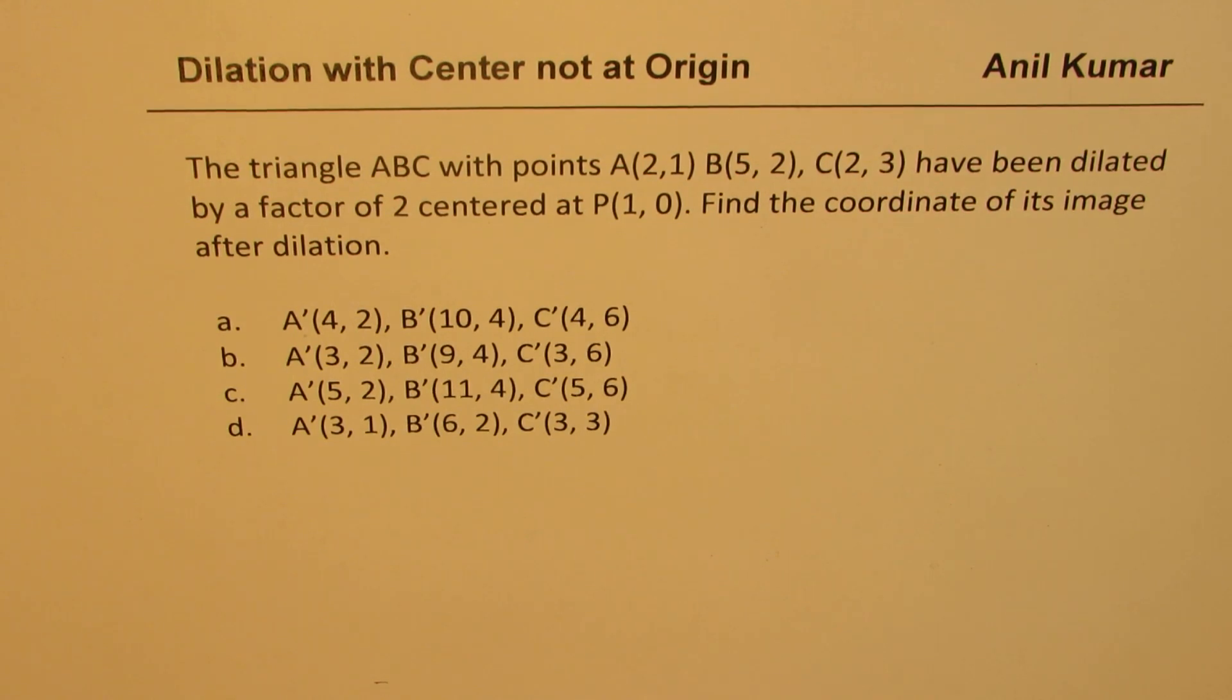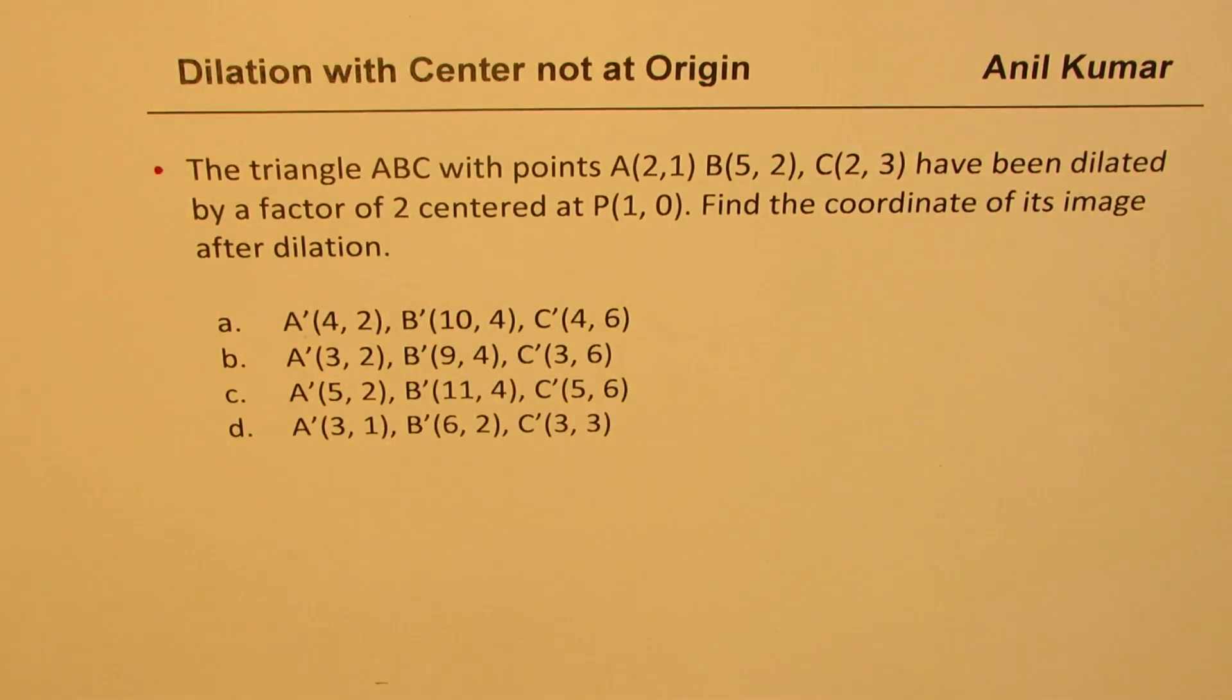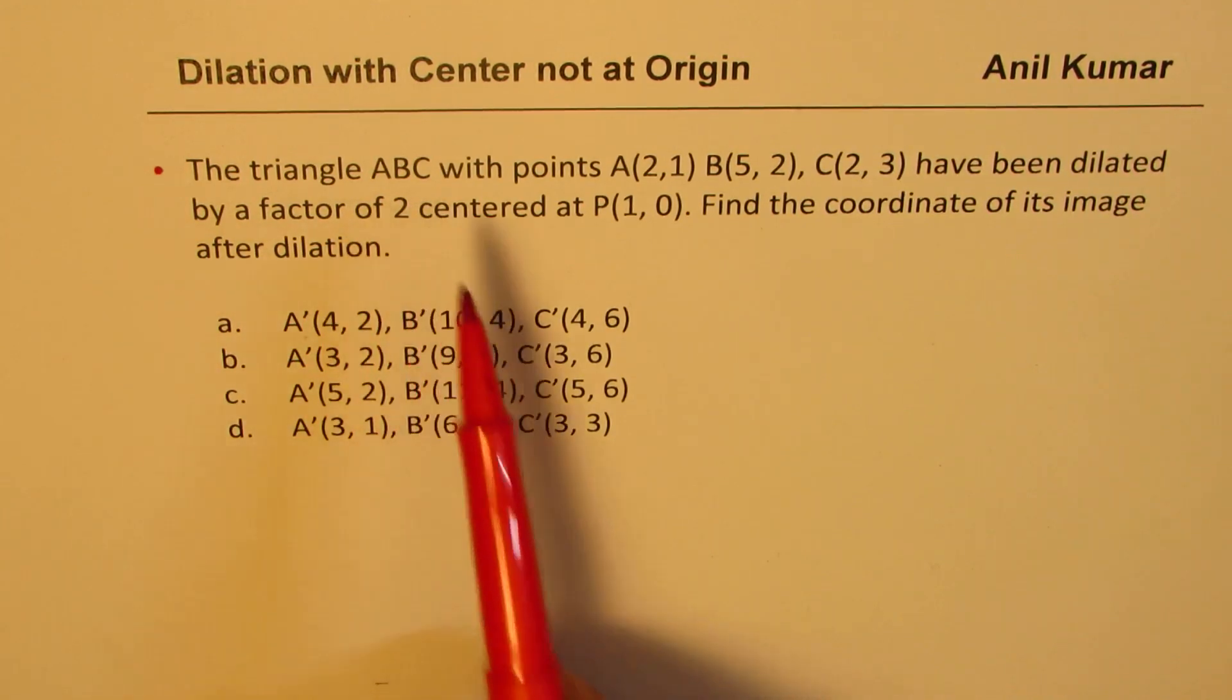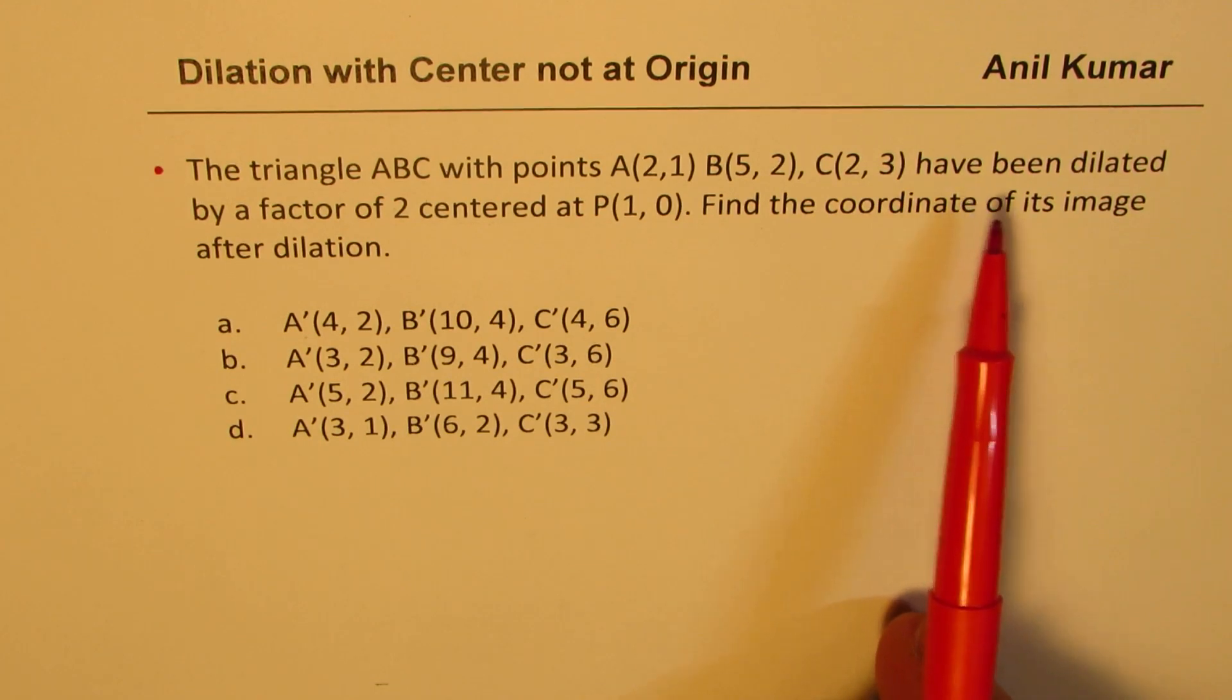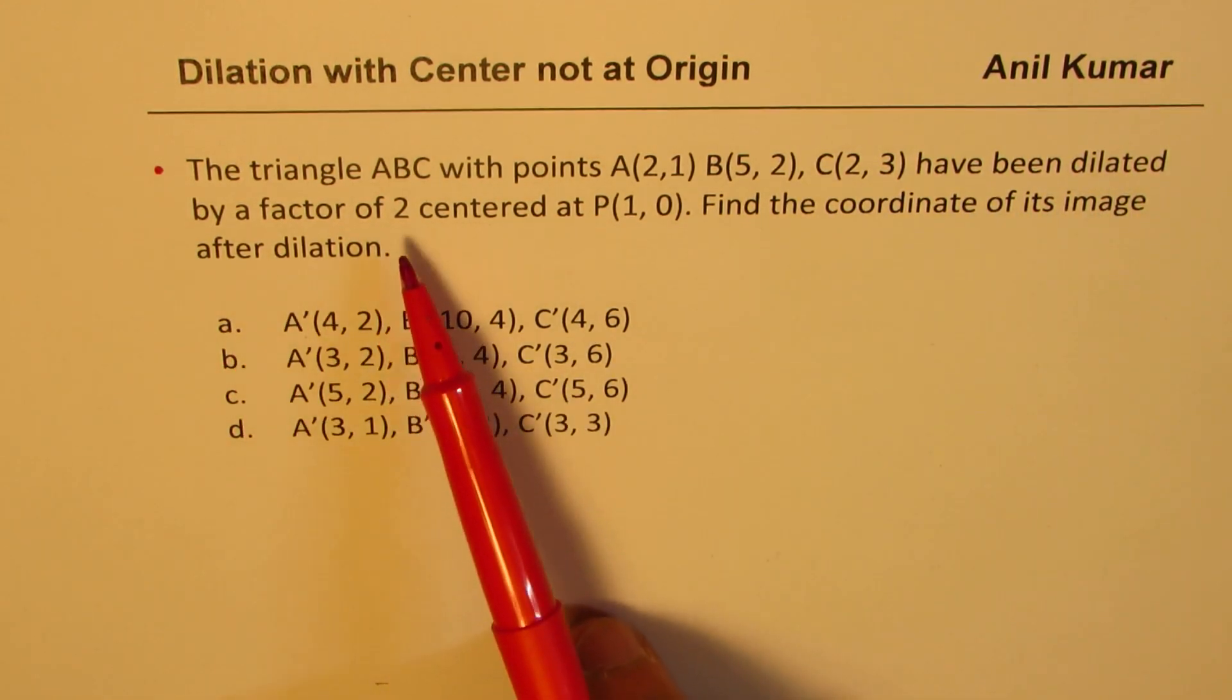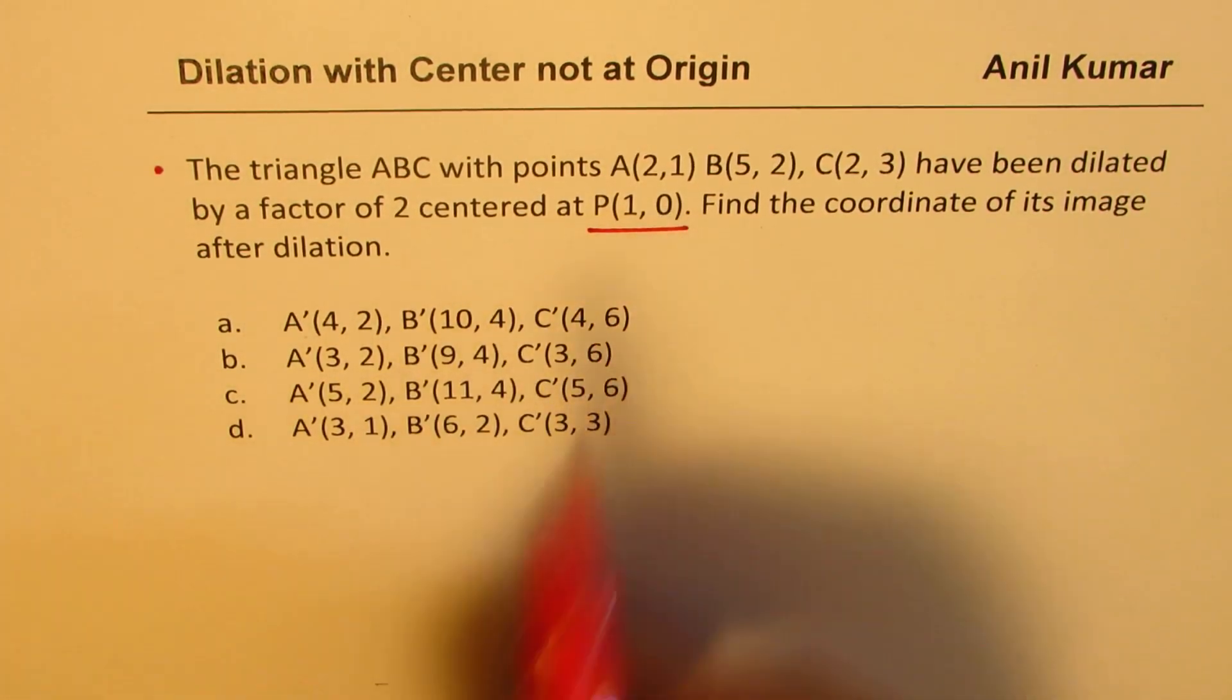Most of the videos and in the textbooks also, most of the examples deal with dilation where it is always based on the center. But here is a variation to this particular question. It is an extremely important question from any good test point of view. The triangle ABC with points A(2,1), B(5,2), C(2,3) have been dilated by a factor of 2 centered at P which is (1,0), not origin.